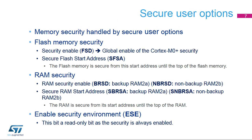Memory security is enabled and configured by secure user options. The flash security disable bit enables the global Cortex-M0 Plus security. The secure flash start address defines the start address from which the flash memory is secure. The backup RAM security disable bit controls the security on the backup RAM, and the secure backup RAM start address defines the start address from which the backup RAM is secure. The non-backup RAM security disable bit is used to enable security on the non-backup RAM, and the secure non-backup RAM start address defines the start address from which the non-backup RAM is secure.